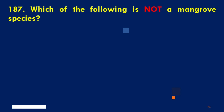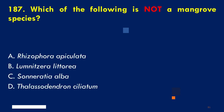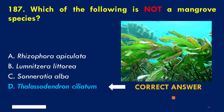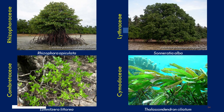Which of the following is not a mangrove species? A. Rhizophora apiculata, B. Lumnitzera littorea, C. Sonneratia alba, D. Thalassodendron ciliatum. The correct answer is D. Thalassodendron ciliatum, which is a seagrass species under the family Cymodoceaceae. The other choices are mangrove species: Rhizophora apiculata is under family Rhizophoraceae, and Lumnitzera littorea is under family Combretaceae.